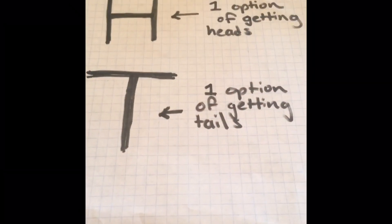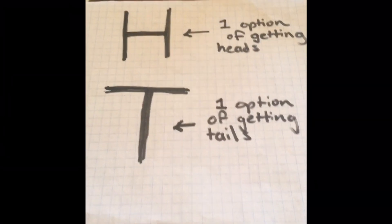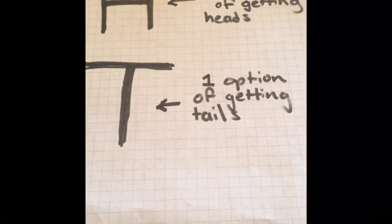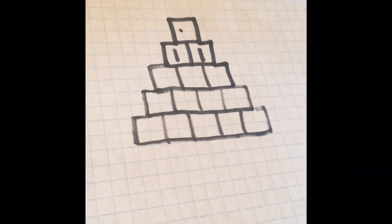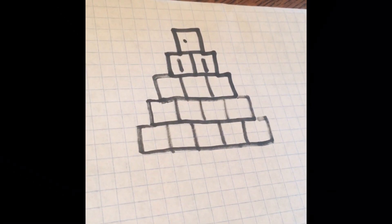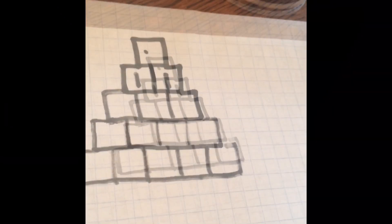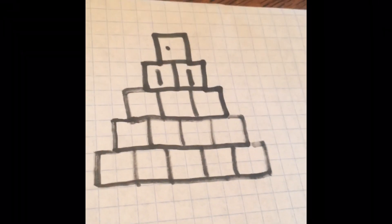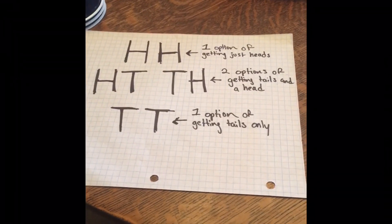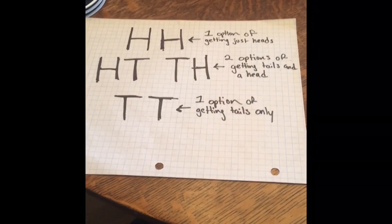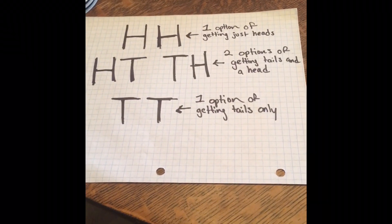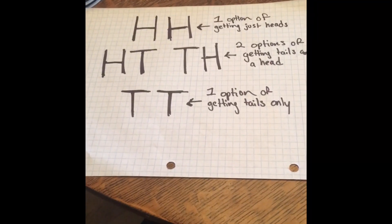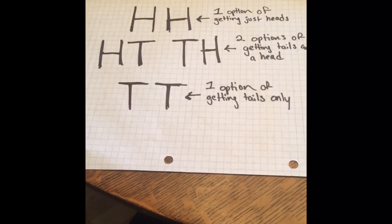Now let's use Pascal's triangle in a real-world problem. Pascal's triangle is relatable to the probability of heads or tails. If you flip a coin, you have one option of getting heads and one option of getting tails, which relates to the second row having one on the left and one on the right. If we flip a coin twice, we have one option of getting two heads, two options of getting a head and a tail, and one option of getting two tails.